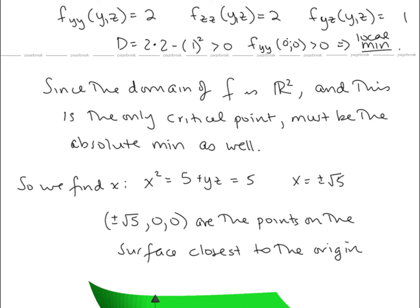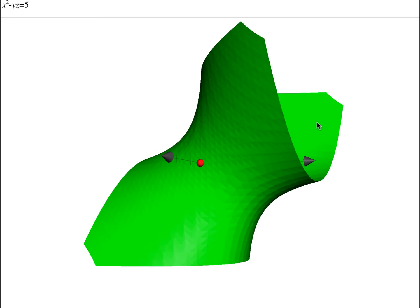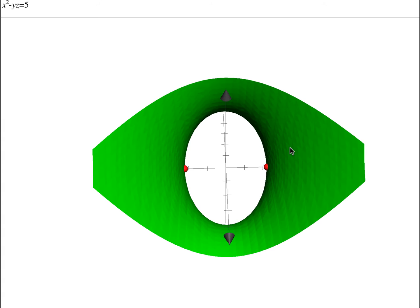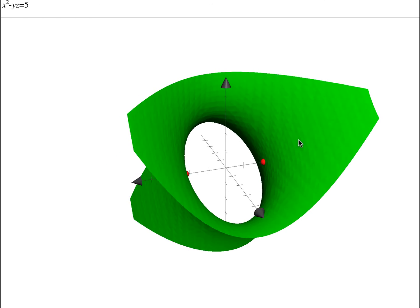We found the y and z coordinates of the closest point on the surface to the origin, but we still need the x coordinate. Recall x² equals 5 plus yz. Since y and z are zero, that gives us x² equals 5, so x equals positive or negative radical 5. The coordinates of the points on the surface closest to the origin are (±√5, 0, 0). Looking at the surface x² minus yz equals 5, we can see those are indeed the closest points to the origin.